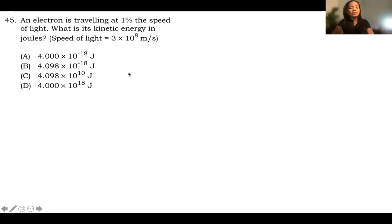An electron is traveling at 1% the speed of light. So we have the speed of light that is 3 times 10 to the 8, but it's kinetic energy in joules. So the formula of kinetic energy is KE equals one-half mv squared.